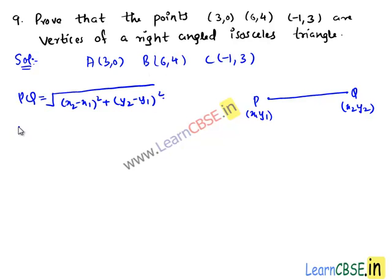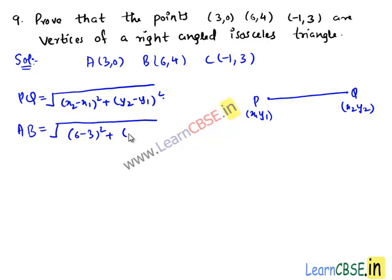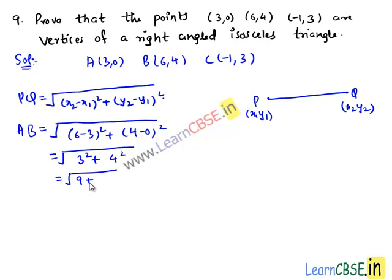Let us find the length AB. AB equals under root of (6 minus 3) whole square plus (4 minus 0) whole square, that equals under root of 3 square plus 4 square, which is equal to root of 9 plus 16, that equals root 25, which is equal to 5 units.